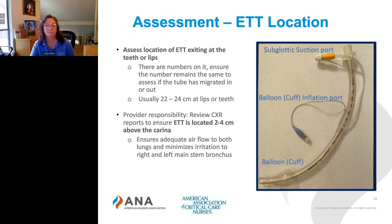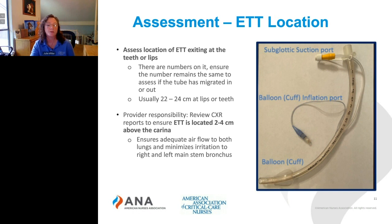You're also going to assess the endotracheal tube where it exits at the teeth or the lips. On the side of the tube are black numbered markings representing the number of centimeters from the distal port below the balloon cuff to the exit point at the mouth. Generally, you'll see the tube exit at 22 to 24 centimeters at the teeth or lips — it may vary based on patient height. This should have been documented when the tube was first placed and is assessed at regular intervals by the respiratory therapist and nurse to ensure the tube has not migrated in or out.